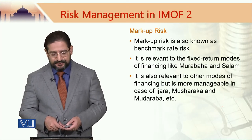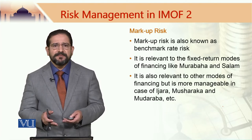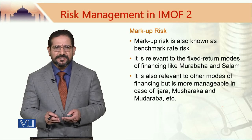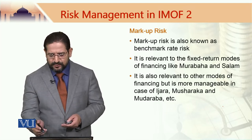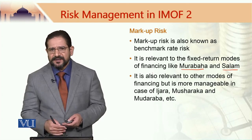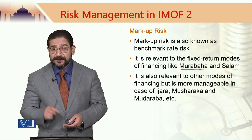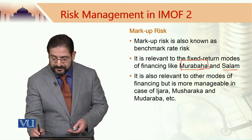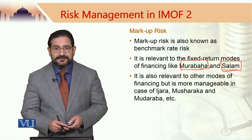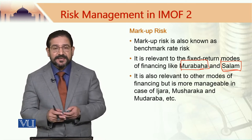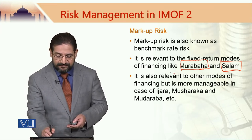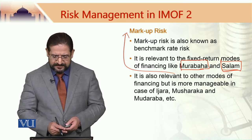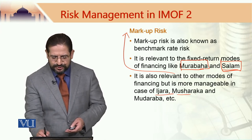The third risk is markup risk, also known as benchmark rate risk. It is relevant to fixed-return modes of financing such as murabaha and salam, and in some cases ijara as well if it is not a variable-rate ijara. Primarily murabaha and salam-based transactions have relevance to markup risk. It is also relevant to other modes of finance but is more manageable in the case of ijara, musharaka, and mudaraba.